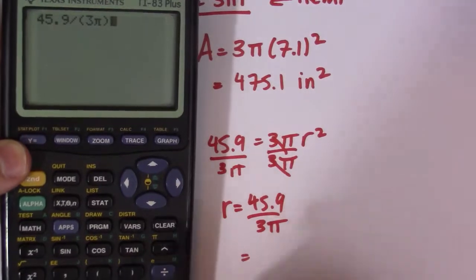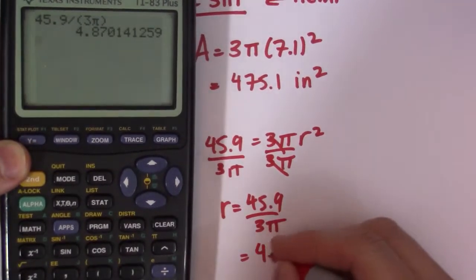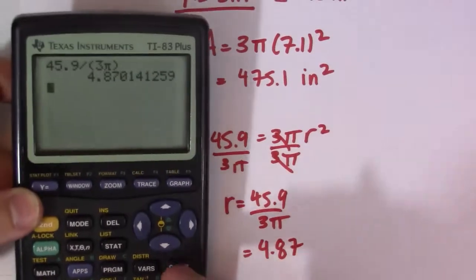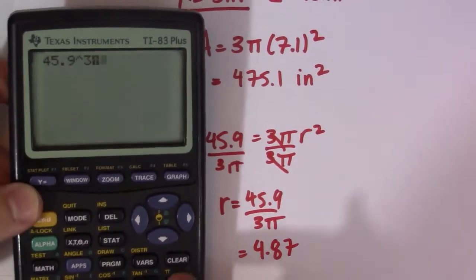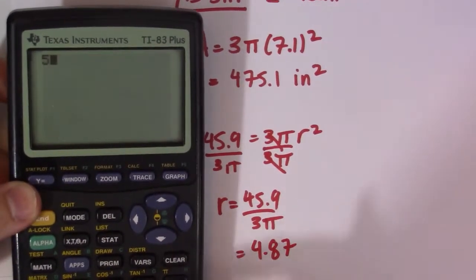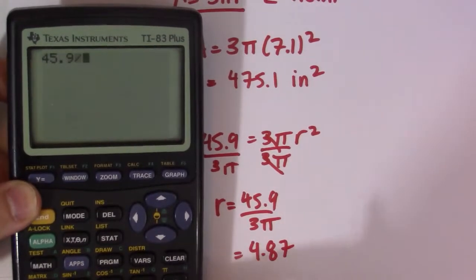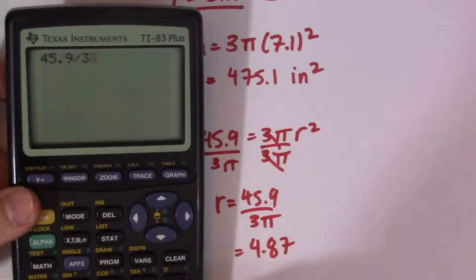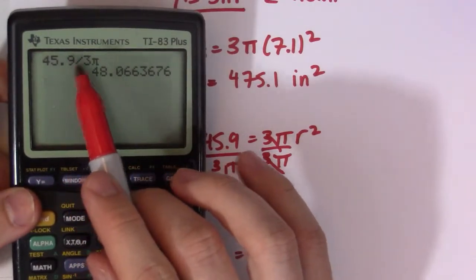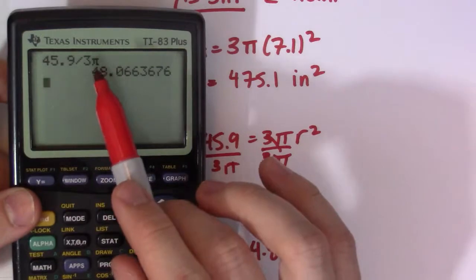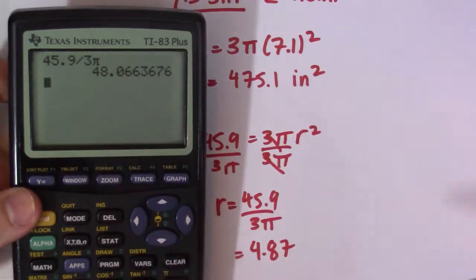So that gives me, when I get it, 4.87. Let's see what I get if I don't do that. So if I do 45.9 divided by 3π without brackets, if I don't do that you can see the answer I get. What it actually does is 45.9 divided by 3 then times π. It doesn't divide by the entire 3π, so just be careful with that.